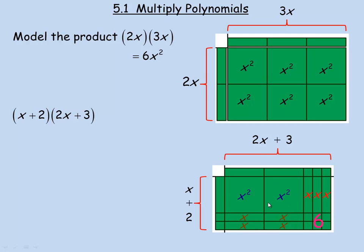We can add all those up to get what x plus 2 times 2x plus 3 represents. I'm going to show algebraically how you do that and how it relates to all these squares and rectangles. So algebraically, to multiply 2 binomials you multiply every term in one of them by every term in the other. So we go x times 2x, which would be 2x squared — that's the 2 x-squareds right there.